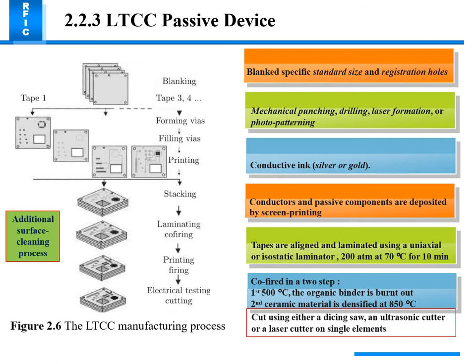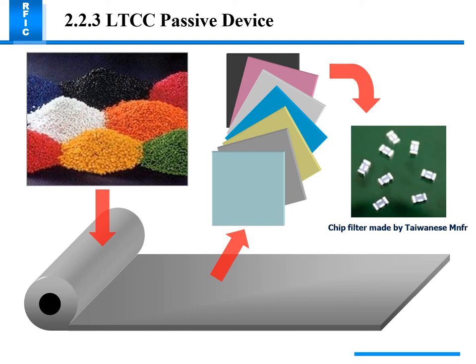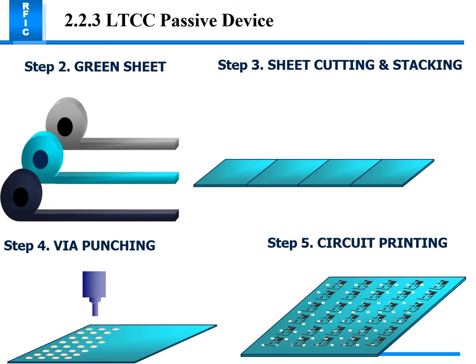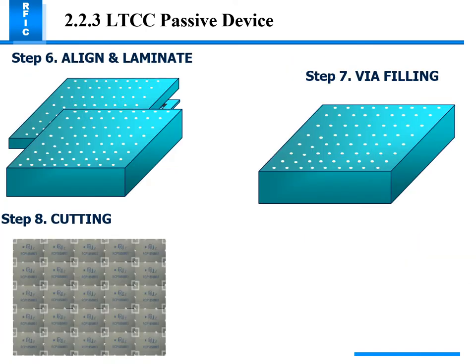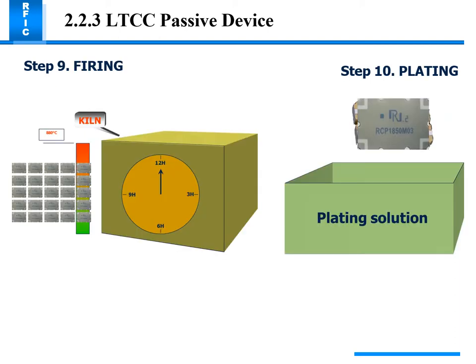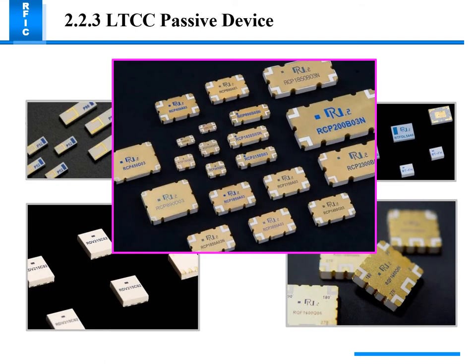The LTCC passive device fabrication starts with the green sheet material of different types. Steps include sheet cutting and stacking, punching, circuit printing on the sheet, aligning and laminating, via filling with gold or silver, firing at 500 and more than 850 degrees Celsius, and plating solution treatment. The final chip is the completed LTCC passive device after the fabrication process.